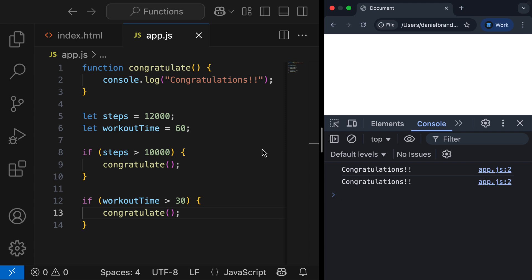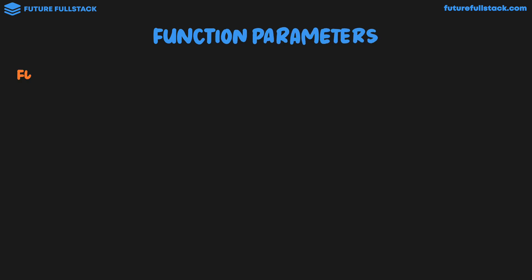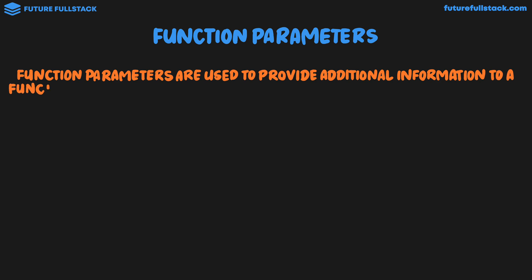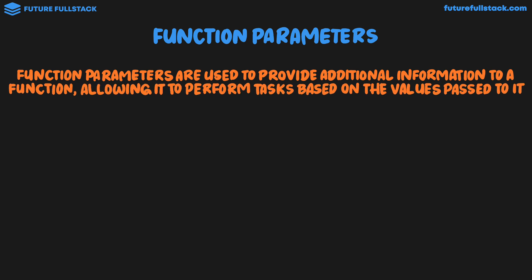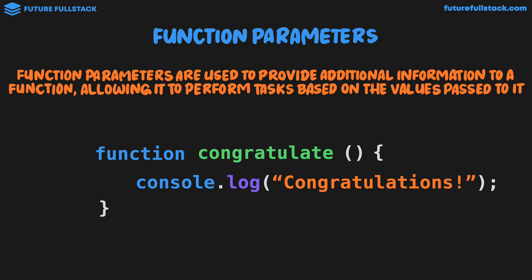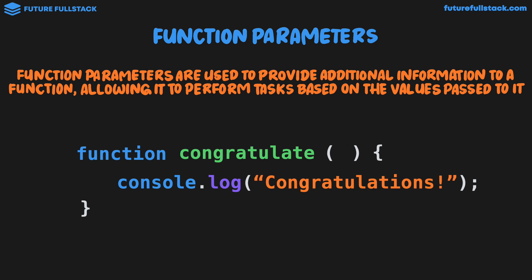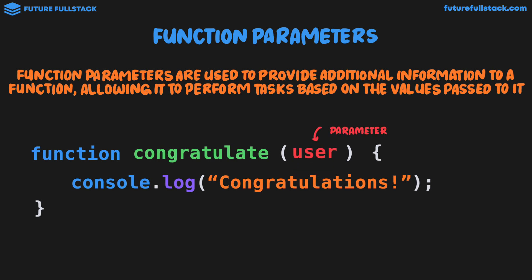Now that we have a basic understanding of what functions are, let's add to our knowledge by learning about function parameters. Function parameters are used to provide additional information to a function, allowing it to perform tasks based on the values passed to it. Looking at our congratulate function, right now it isn't very personalized — it just says 'congratulations'. But wouldn't it be great if we could congratulate a specific user? To achieve this, inside our parentheses we define a parameter. I've given my parameter the name 'user', and we can then use that parameter inside our function body — effectively like a variable inside the function.